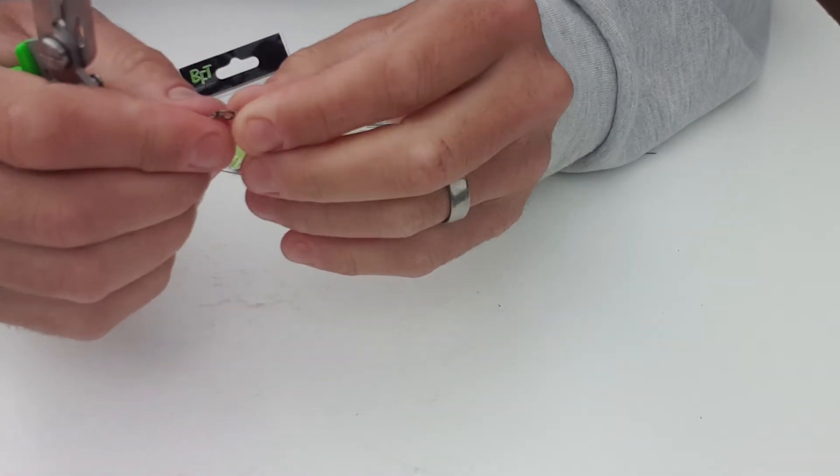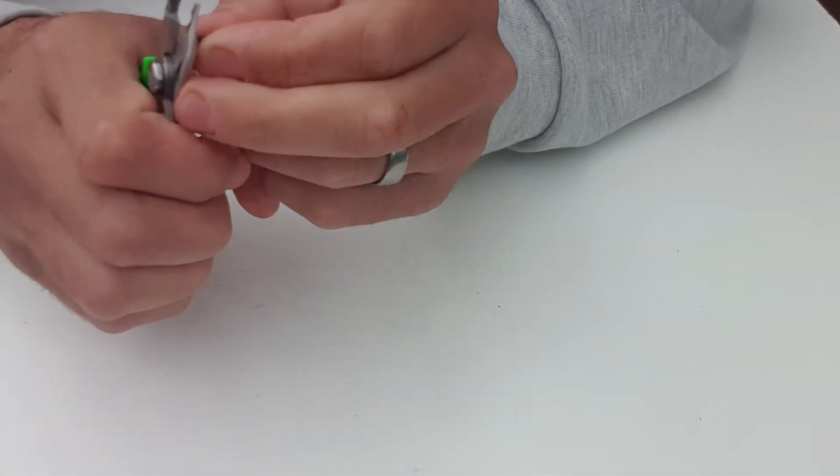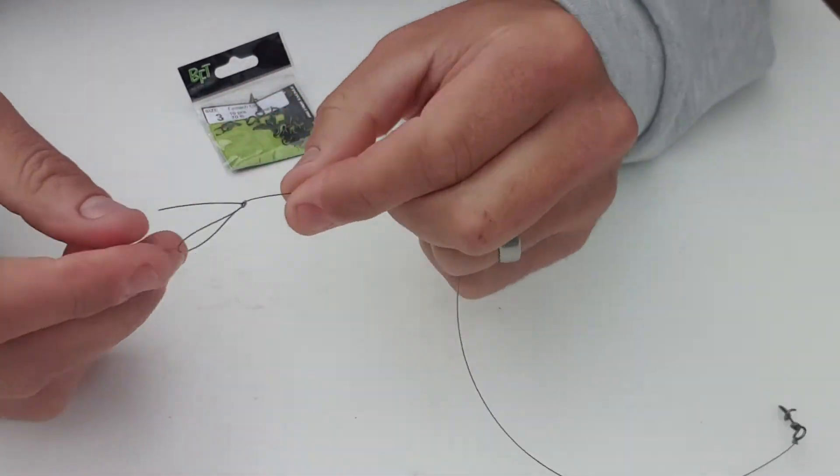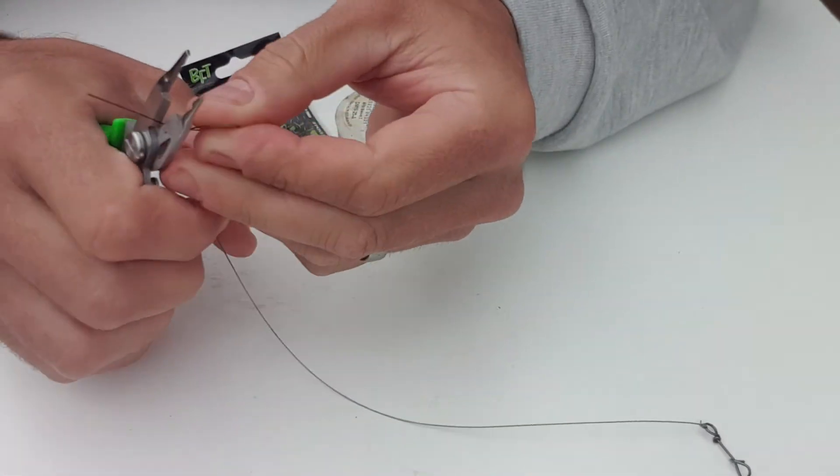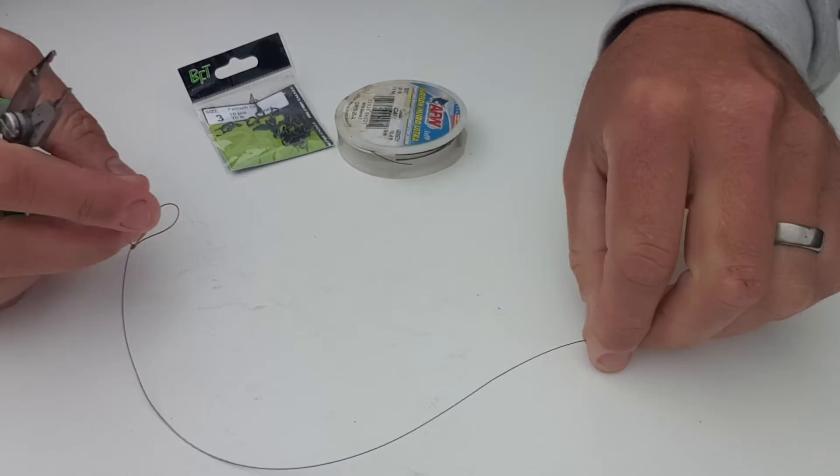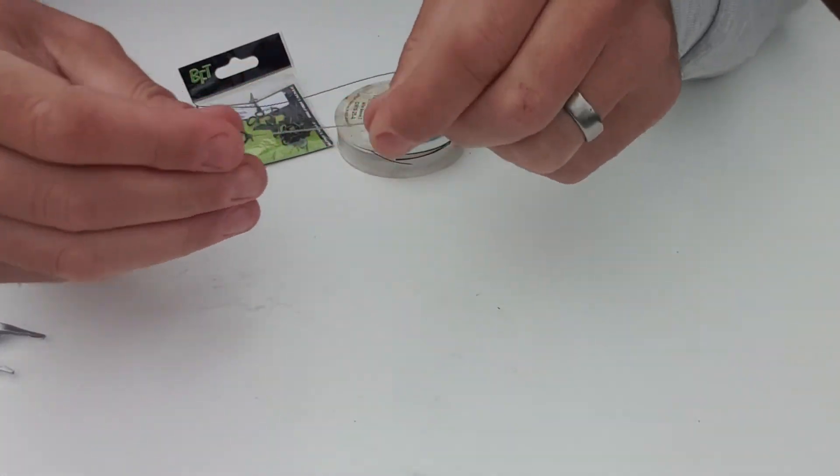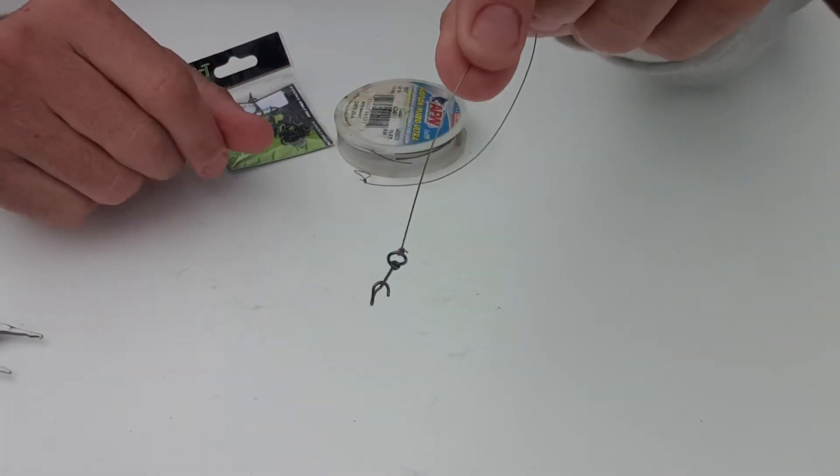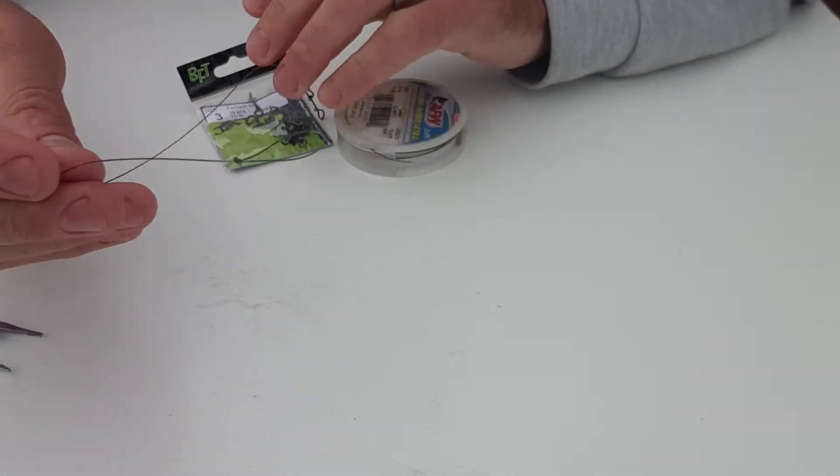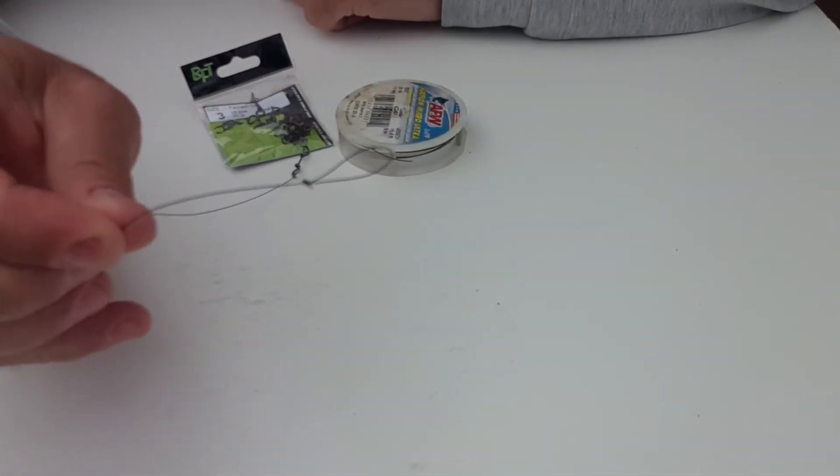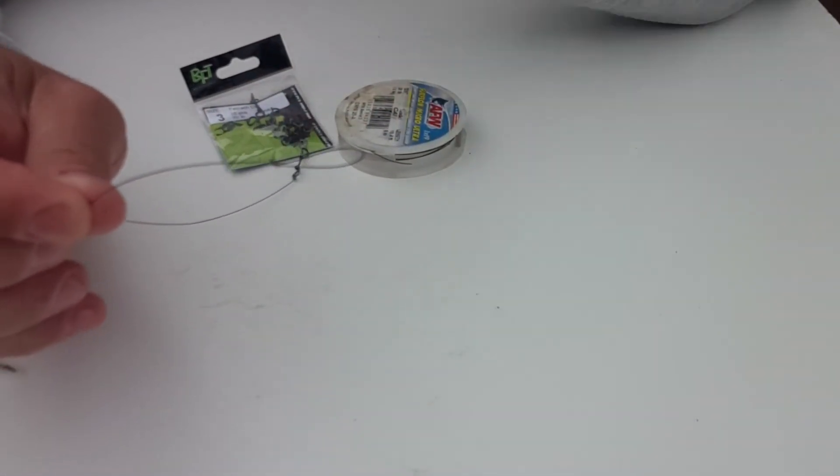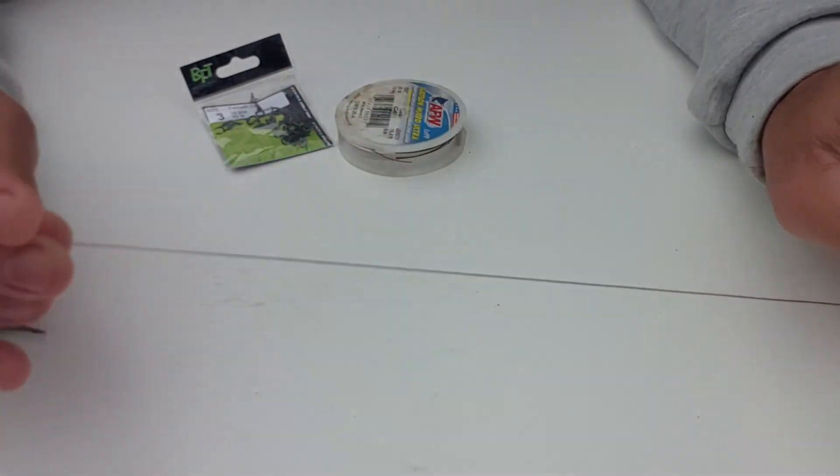And just cut off your tag end and away you go, you've got a nice straight trace there. And you just connect that loop up to your fluorocarbon or whatever it is you're using. There you go, simple as that.